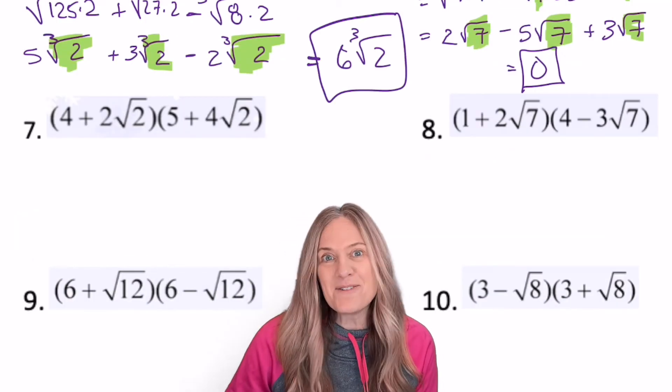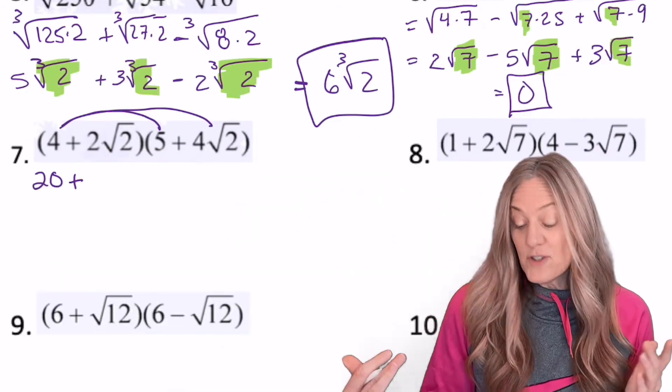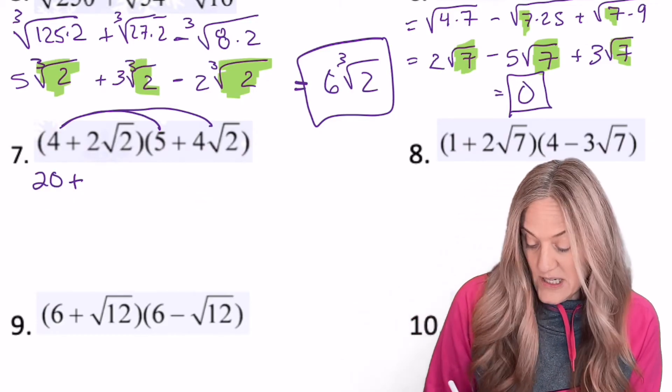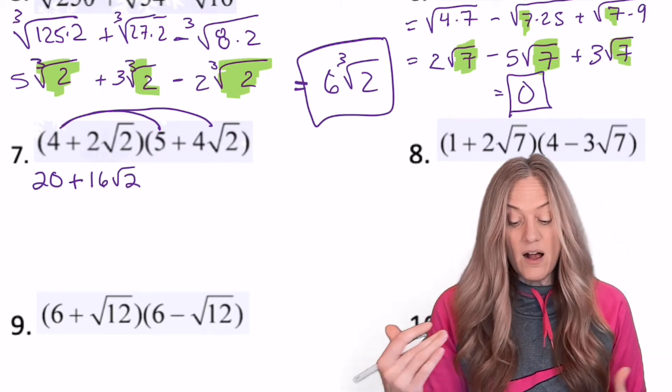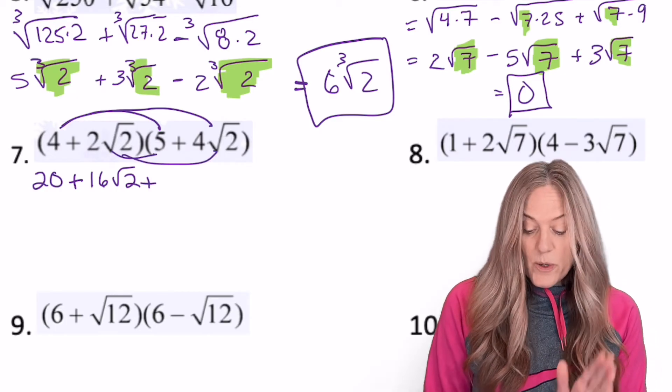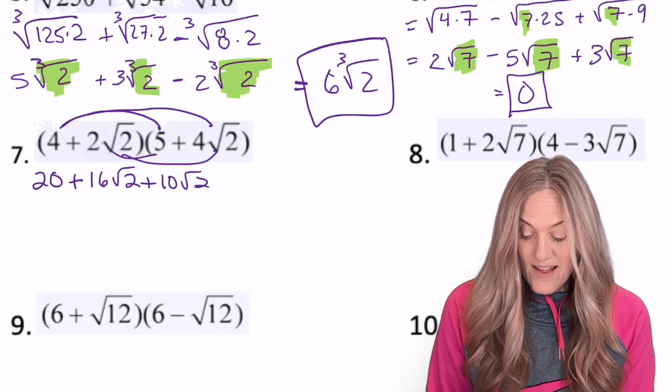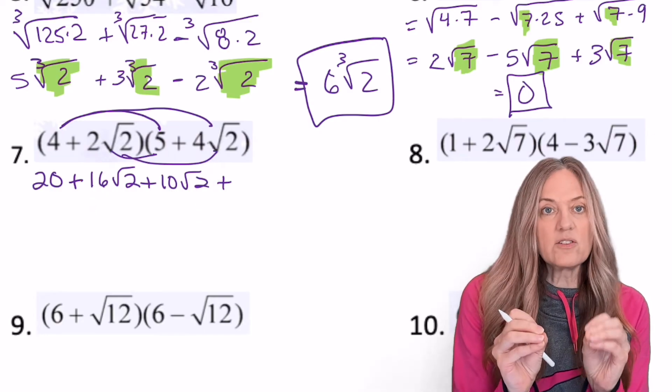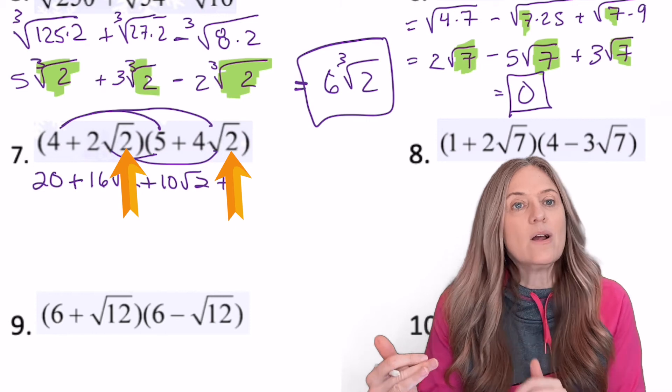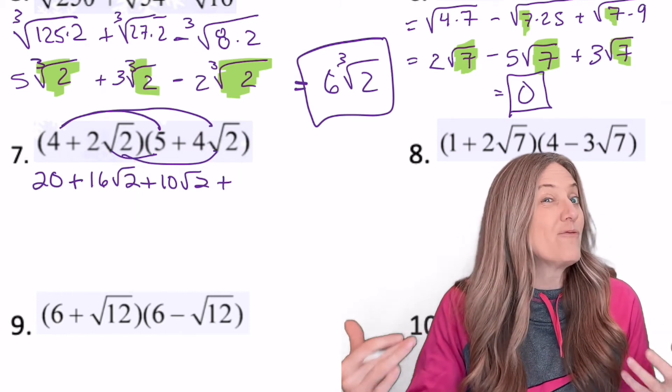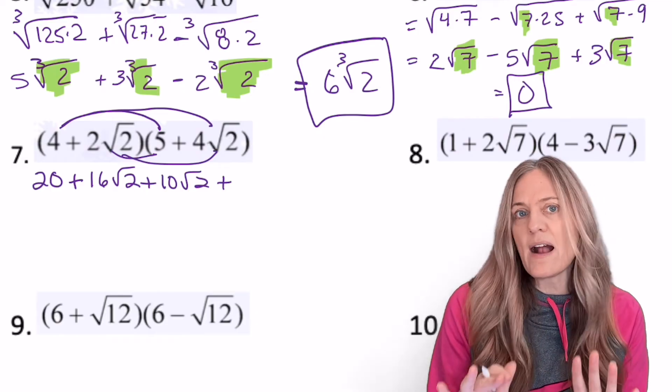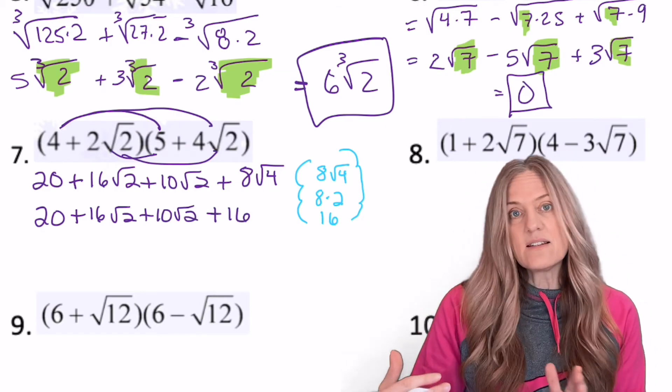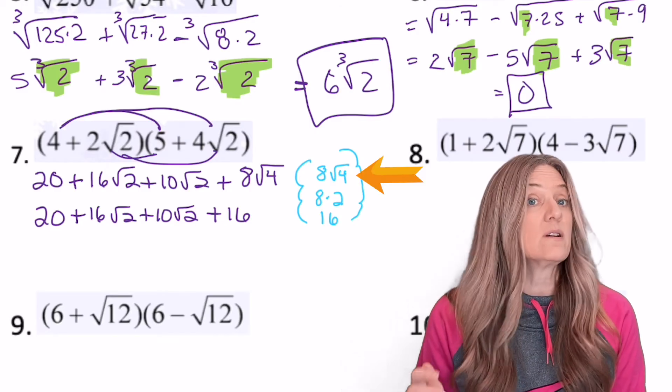Now we get to multiply binomial radicals. 4 times 5, 20. 4 times 4 root 2. So I'm going to multiply the things outside the radicals and keep the stuff inside. So 4 times 4 is 16 times that root 2. Next, I'll distribute 2 root 2 into the other binomial. 2 root 2 times 5, so 10 root 2. And then, careful here, because I have 2 root 2 times 4 root 2. Well, the things outside I can multiply together. So 2 times 4, 8. And then things inside I can multiply together. So square root of 2 times square root of 2, square root of 4, right? Now I'm going to do this in a couple of steps because we don't want to lose track of what's going on.